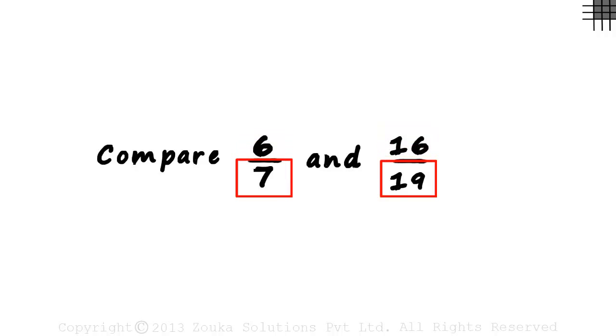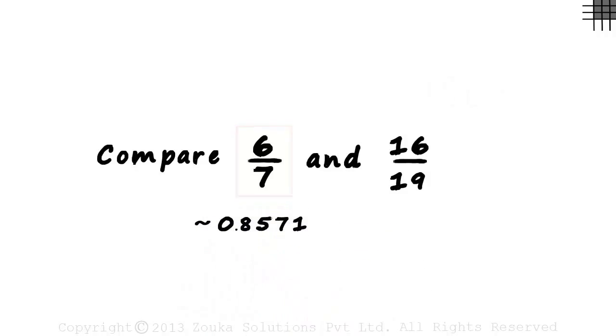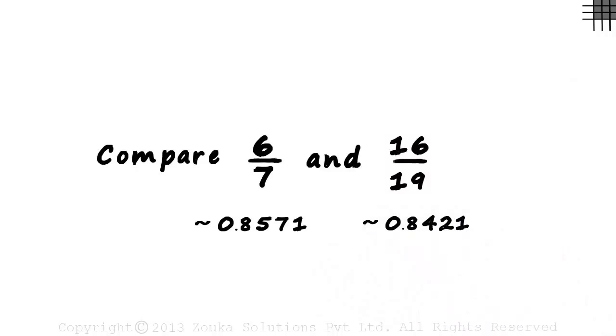The denominators are different. Using a calculator, we see that 6 by 7 approximately equals 0.8571, and 16 by 19 approximately equals 0.8421. Pretty close I would say.